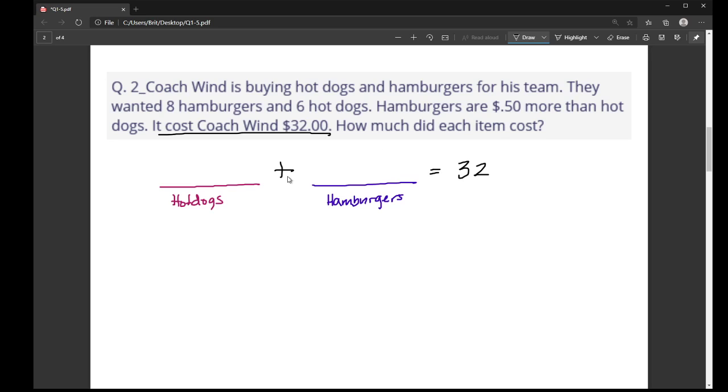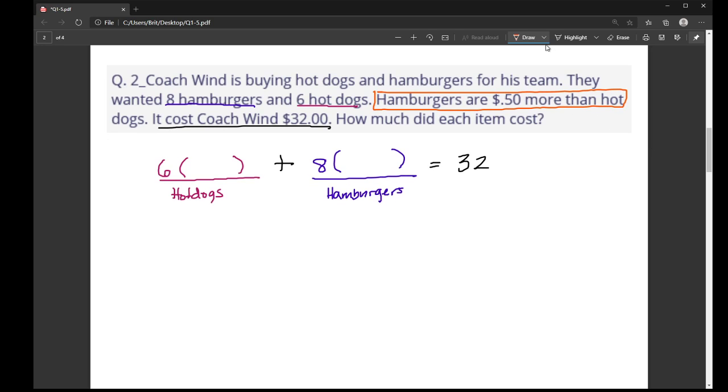So what we have to do is we have to think about how much it costs for hamburgers and hot dogs. So he's buying eight hamburgers according to this problem. So I'm going to have eight times whatever hamburgers cost. And then in terms of hot dogs, I know I'm buying six hot dogs with Coach Wind. And I'm going to multiply that six by however much hot dogs cost. That way we get an actual cost here. So what we need is we need a little bit of help filling in those blanks. So that's where this orange sentence helps us. What it does is it gives us a second equation to consider.